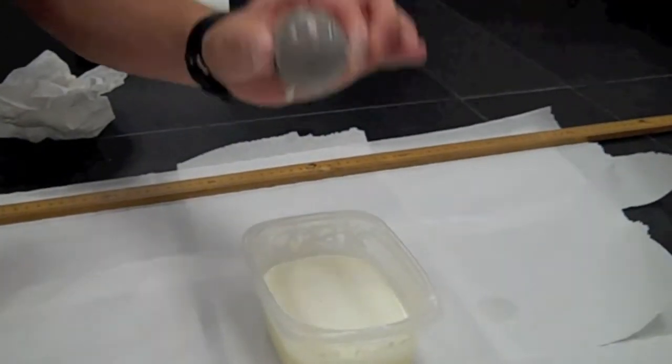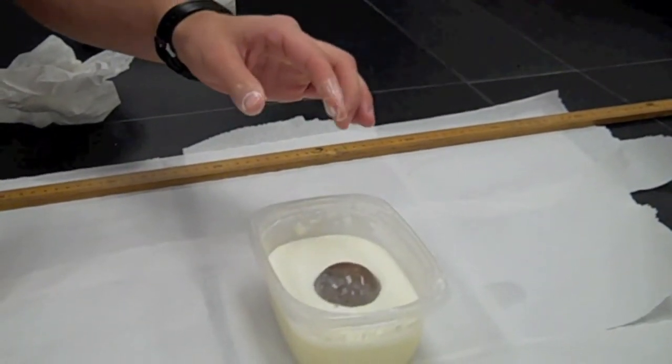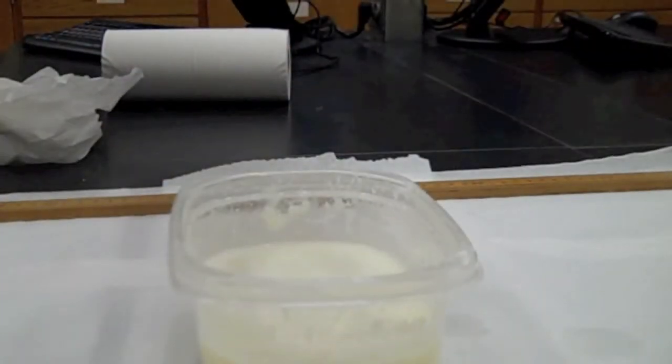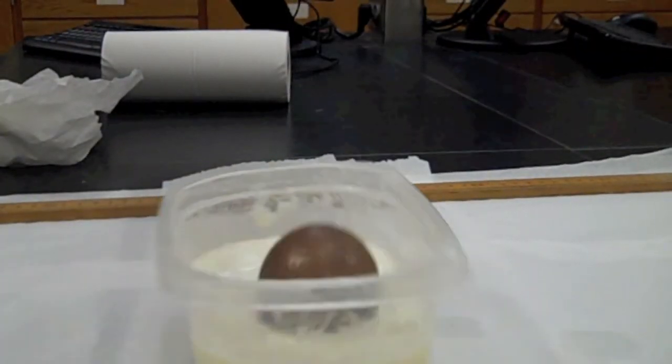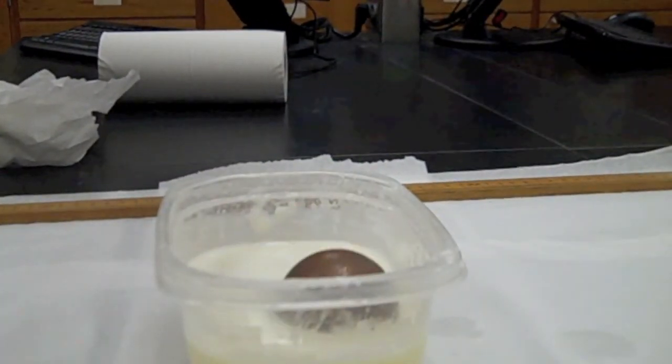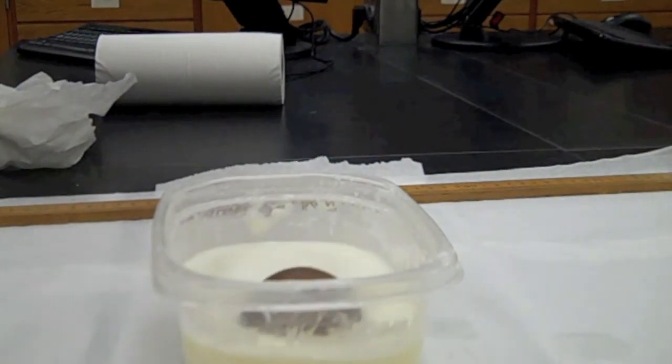Our second intermediate experiment was throwing a heavy metal ball onto our solution. The ball hit the water and then stayed there for a little bit and then it sank, showing that if the solution is hit hard enough, we can walk on it.